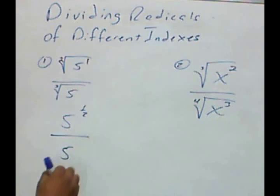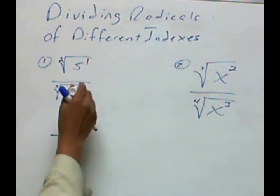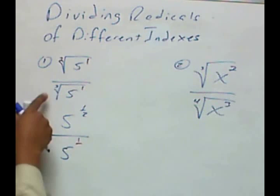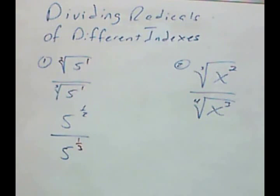Using that same idea, this 5 also has an understood 1, so that would be the numerator. And the 3 is the denominator.